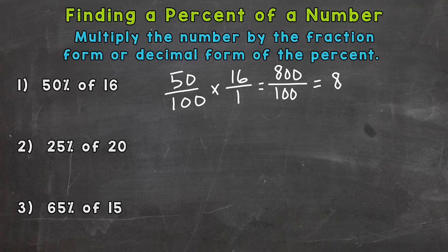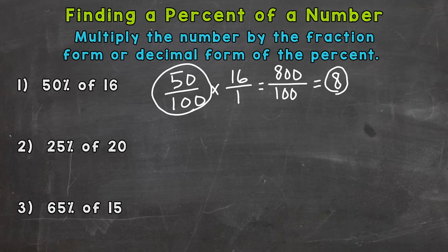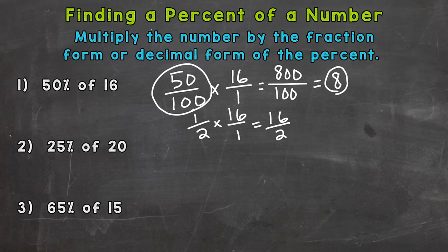That improper fraction 800 over 100 got fairly large, so 800 divided by 100 equals 8. If you know a simplified version of the fraction — 50 hundredths is one-half, those are equivalent fractions — we can replace 50 hundredths with one-half, multiply by 16, and get 16 over 2, which is much more manageable. 16 divided by 2 gives the same answer of 8. You can use the simplified version of the fractional form of the percent.